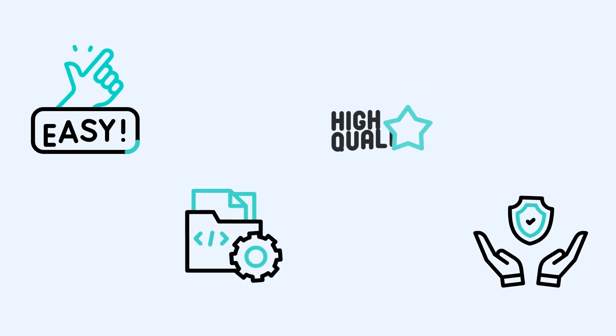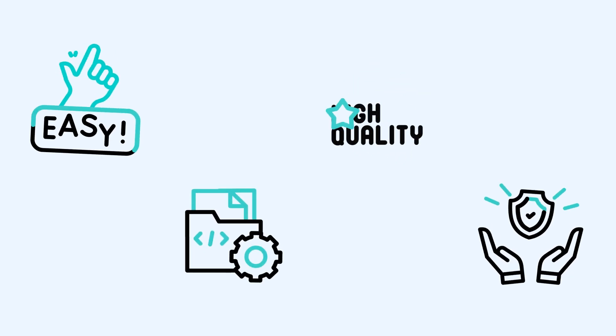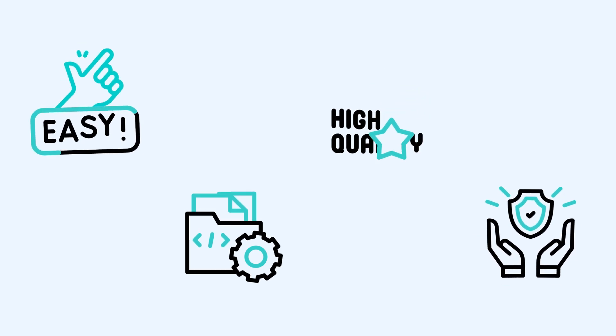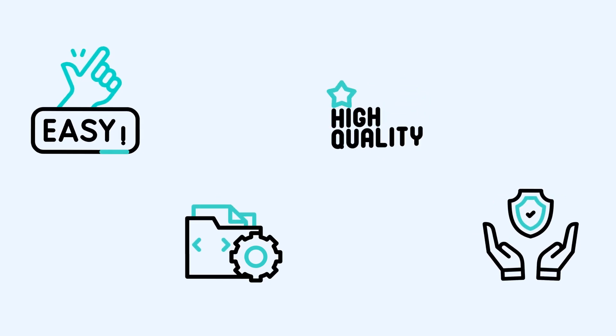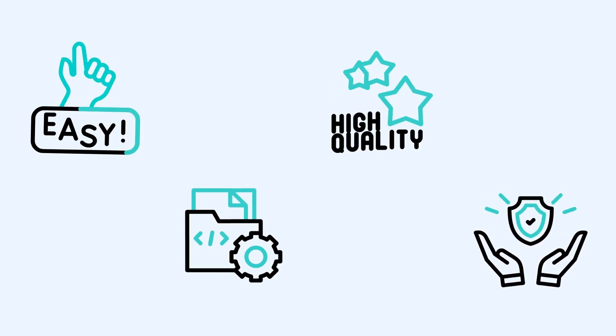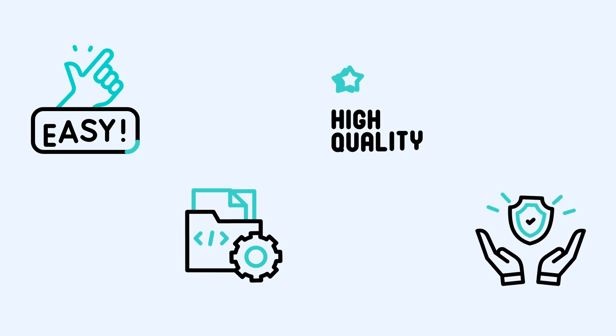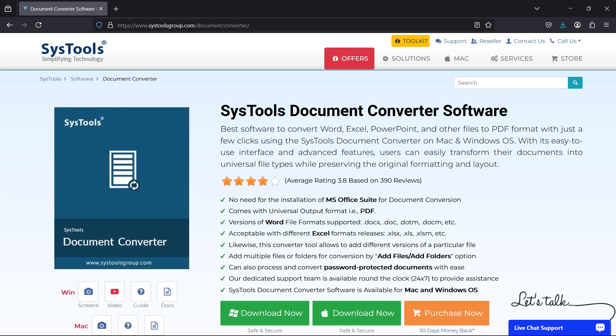There's a simple and effective way to do this by converting the WPS file into PDF format. I recommend using SysTools Document Converter, a reliable tool that makes this process quick and hassle-free. First, go to the SysTools website, download the Document Converter, and install it on your system. The installation is straightforward — just follow the on-screen instructions.